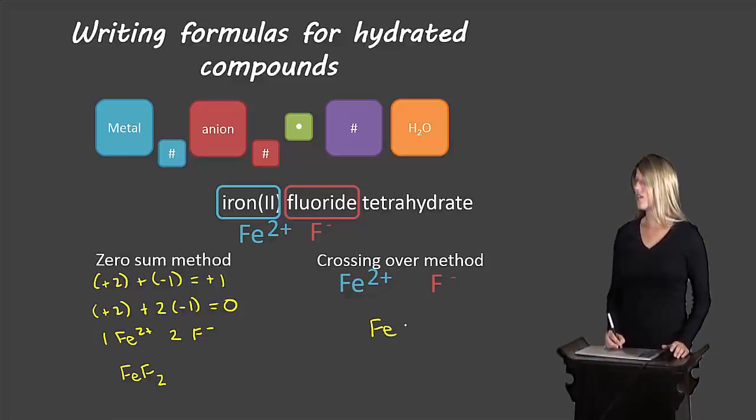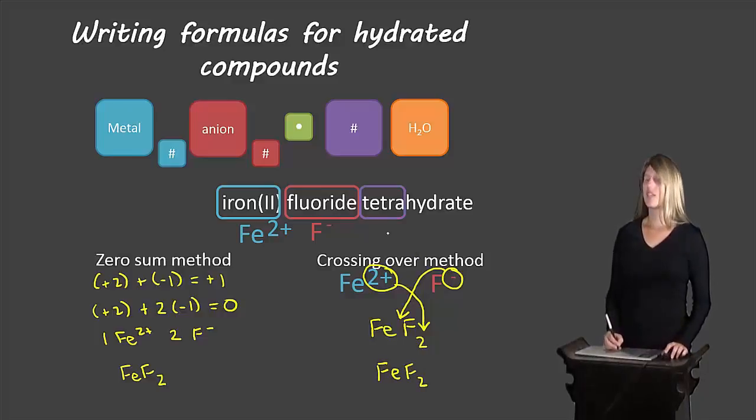Now we would have the same thing with crossing over. Here we write our FeF beside each other. We take the charge on the iron and put it as our subscript for F and the charge on the fluorine as our subscript for the iron. We don't write subscript 1 so we leave it as is. So we end up with FeF2. Now our next step we look here and we see tetra is the number so we write dot 4 and then we write our H2O. That's how we would solve a problem like that.